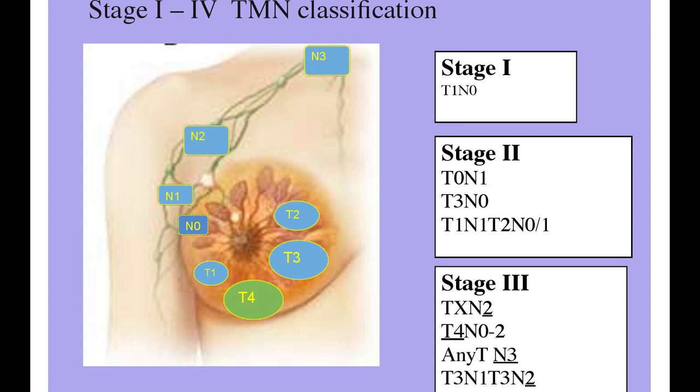Stage three breast cancer is all getting a bit worse — larger tumors, more lymph glands involved, more extensive lymph glands involved, perhaps going up into your neck. So this is still regarded as early breast cancer, and this is stage three breast cancer.